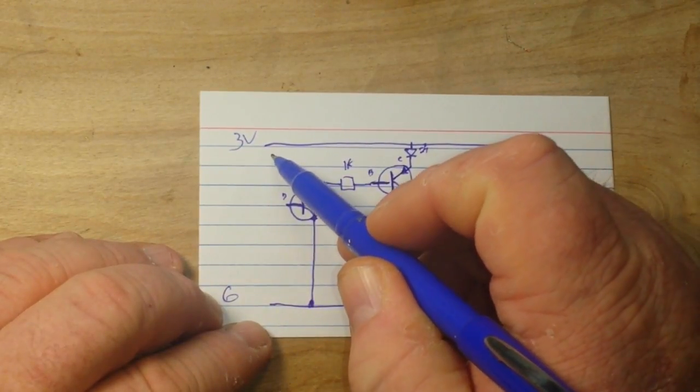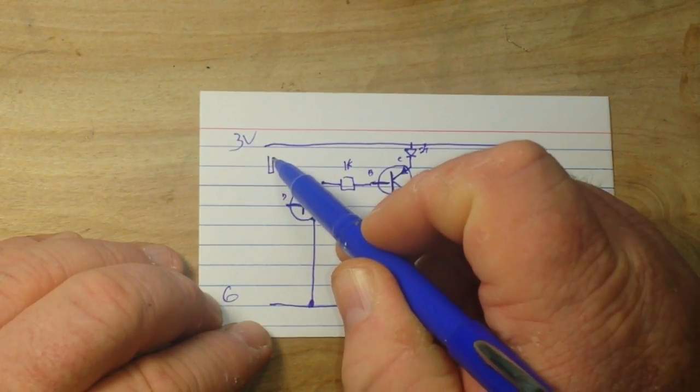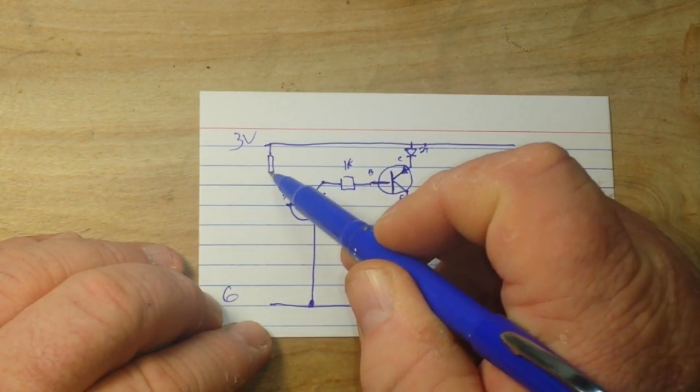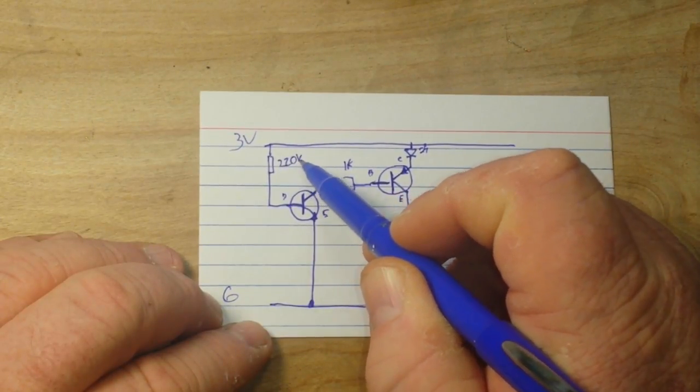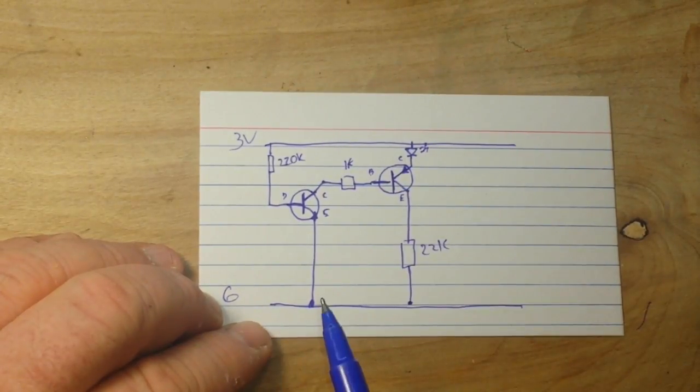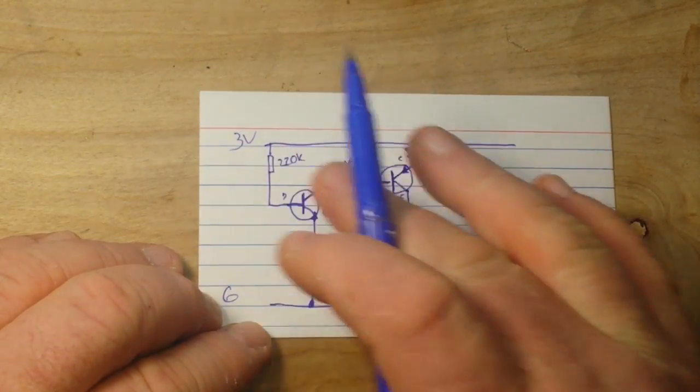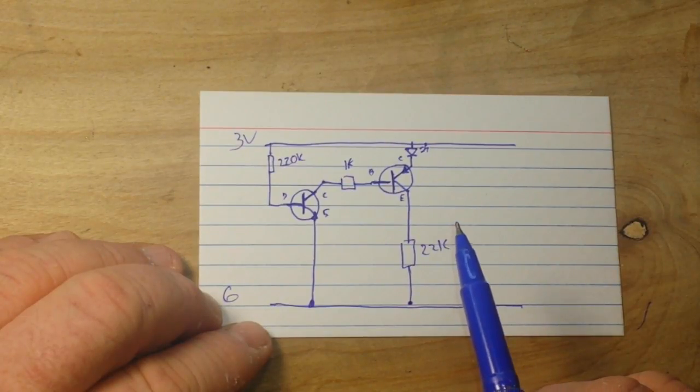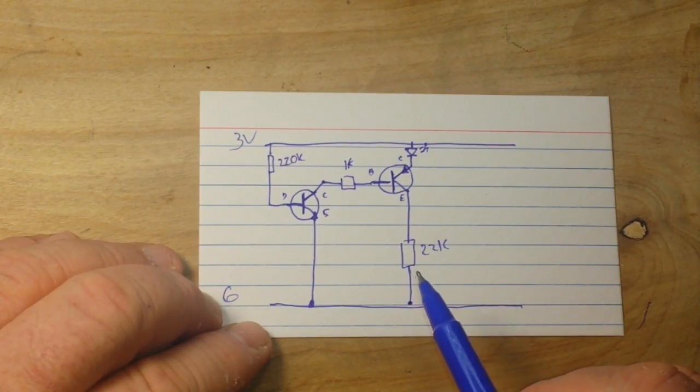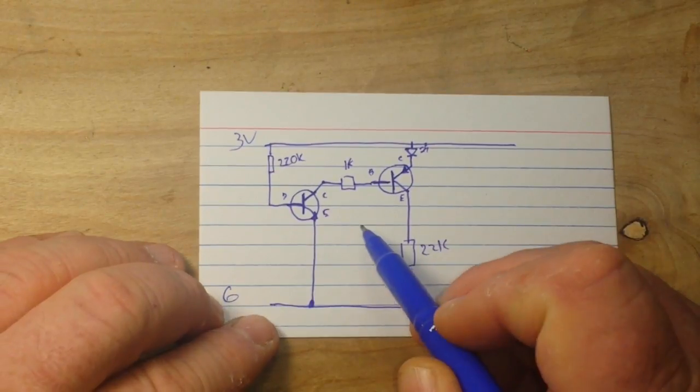And this guy can go directly to ground. We're gonna need to bias the base here, somewhere about 220K, in that range. You want to be about 10 times, 10 times difference, we don't have to be perfect, or exact, or anything.